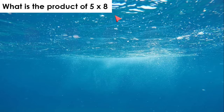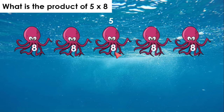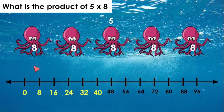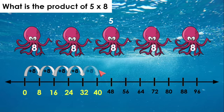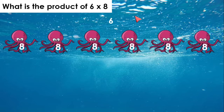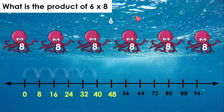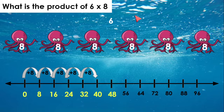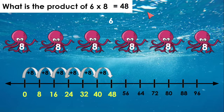5 times 8 means 5 octopus with 8 legs each. How many legs will there be in all? Let's go ahead and skip count. We were at 40. So now we need to add 8 more. 40 plus 8 makes 48. So 6 times 8 equals 48.